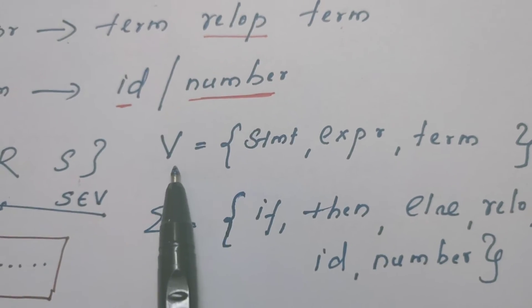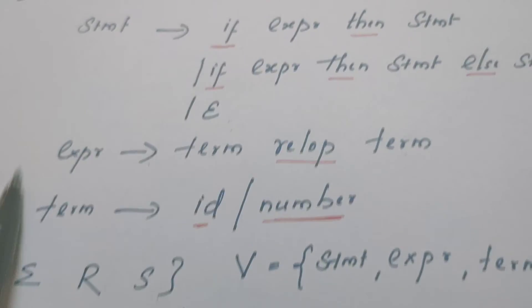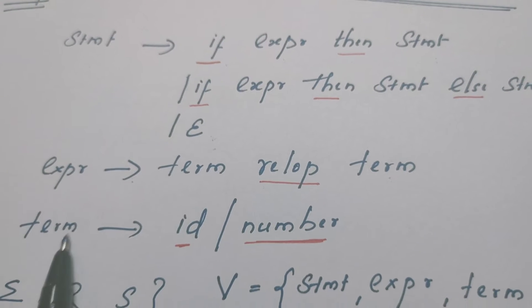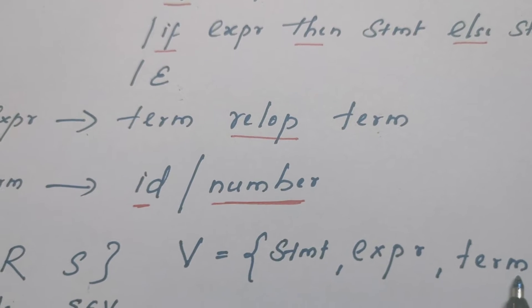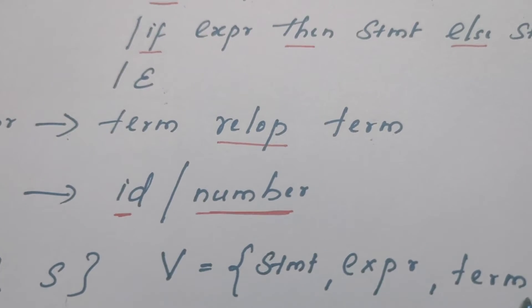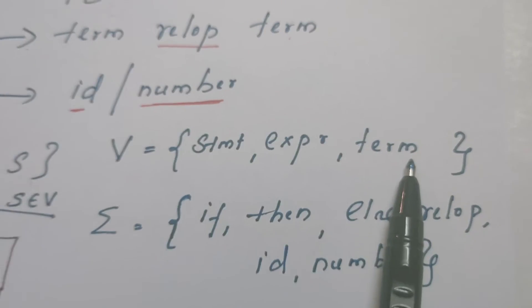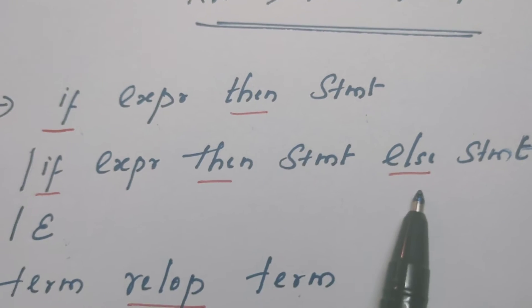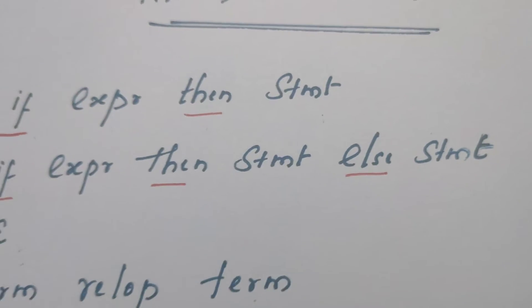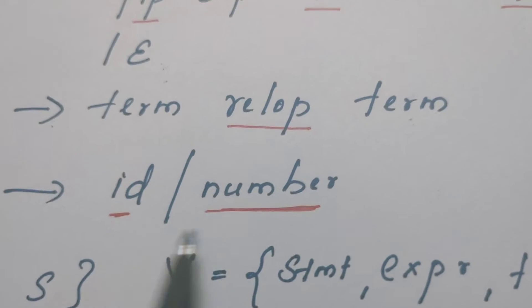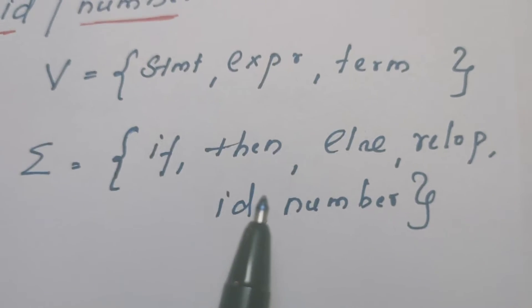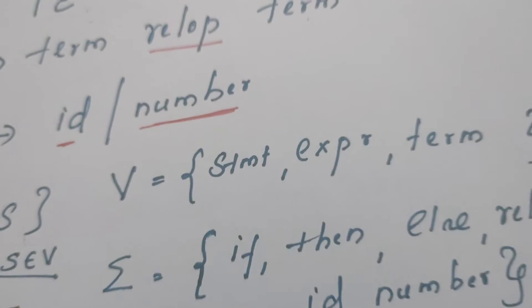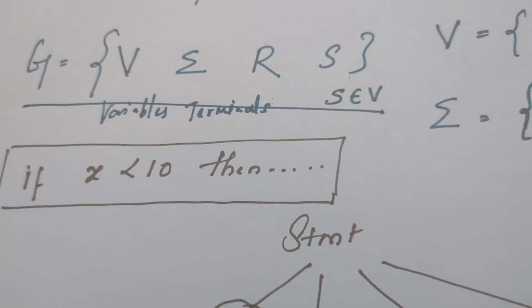The variables are the symbols that appear on the left-hand side of the arrow mark, so statement, expression, and term are the variables. Apart from the variables, every other symbol is a terminal — so if, then, else, relational-operator, identifier, and number are all terminals of the given grammar.